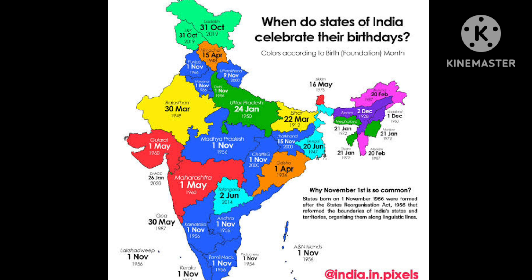Bihar was founded on 22 March 1912. The colors on the map represent the birth/foundation month: light green for October, dark green for January, yellow for March, red for May, blue for November, turquoise for June, orange for April, purple for December, and pink for February. Have a look.